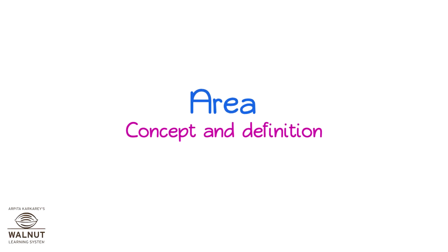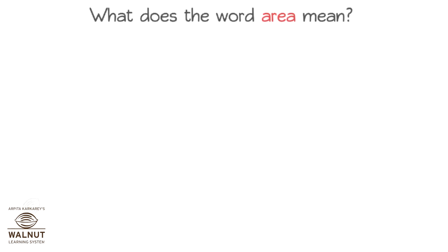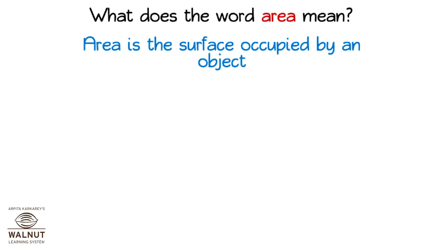Area: Concept and Definition. What does the word area mean? Area is the surface occupied by an object.